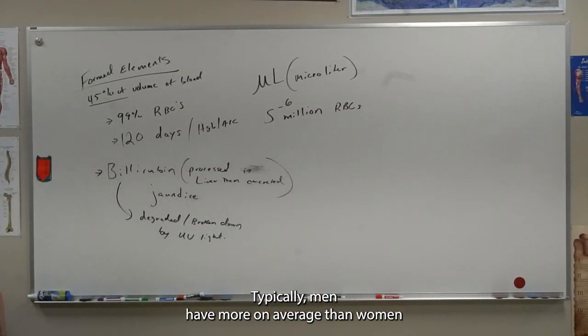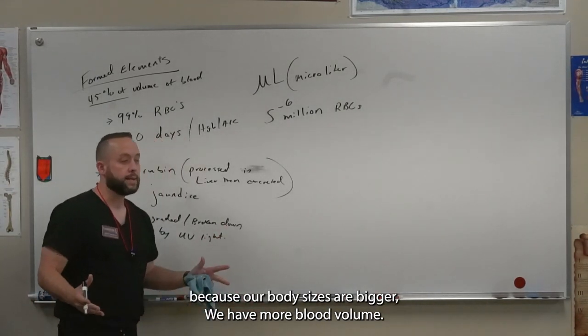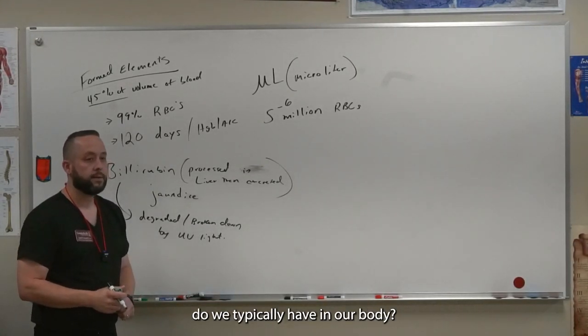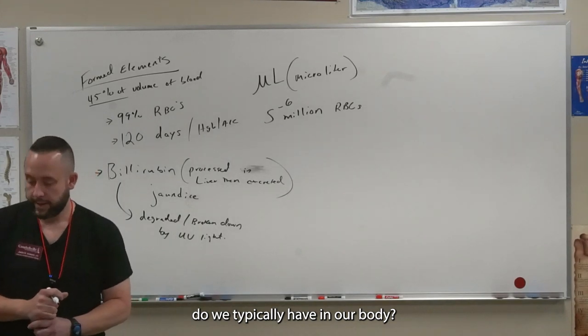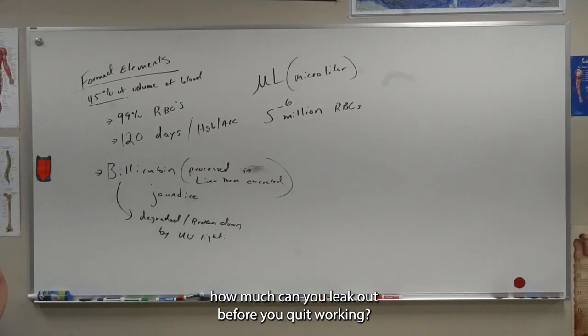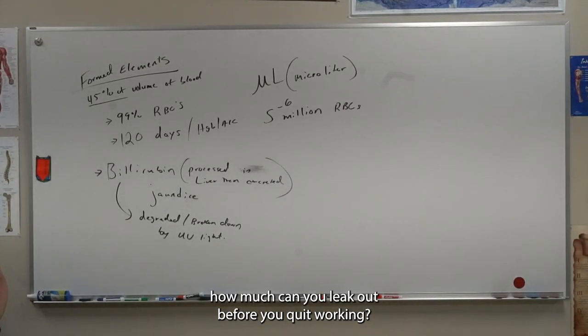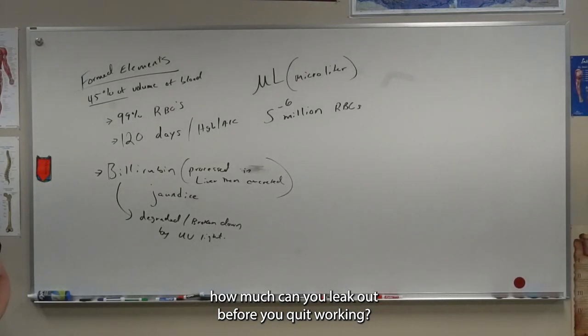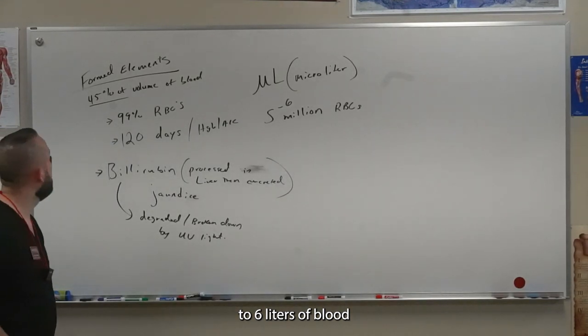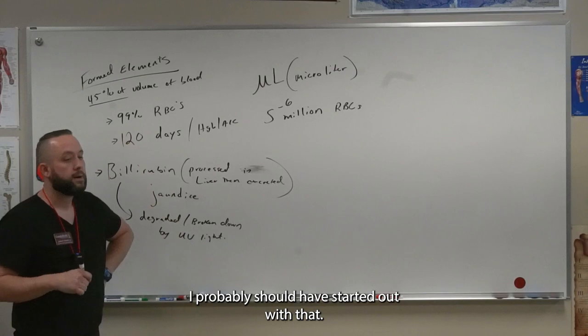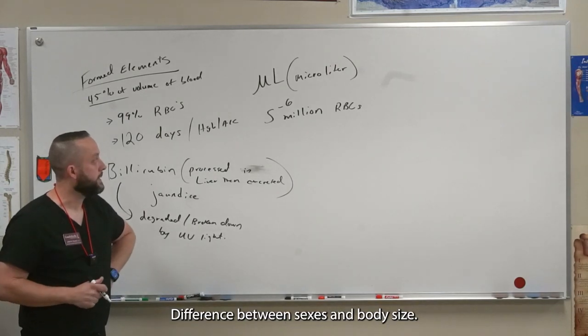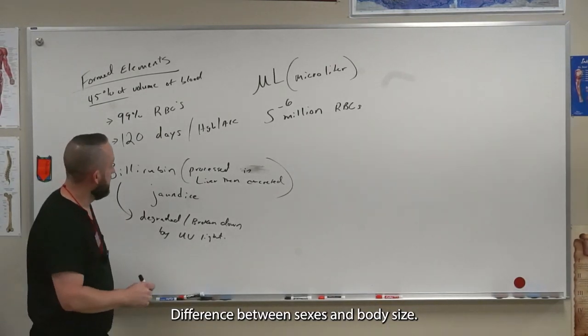Typically men have more on average than women because our body sizes are bigger, we have more blood volume. How many liters of blood do we typically have in our body? Page 107 will tell you five to six liters of blood. I probably should have started out with that, but you contain about five to six liters of blood total in your body. Difference between sexes and body size.